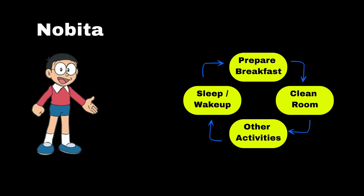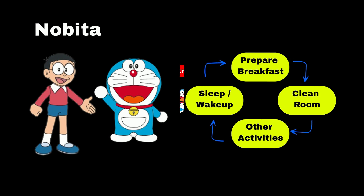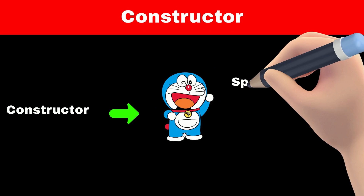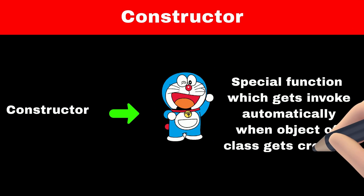So one day Nobita built a robot to perform these tasks. Now whenever he wakes up, the robot will prepare breakfast for him and will clean his house. Constructor is similar to a robot which will perform some task when an object of a class is created.